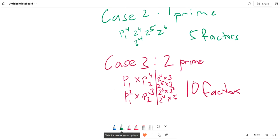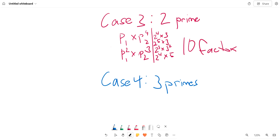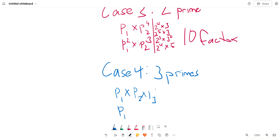Case 4: 3 primes. We want 15 factors now instead of 10 because we have 3 primes. The forms are p1 times p2 times p3 to the 4th, or p3 cubed, or p1 times p2 squared times p3 squared.